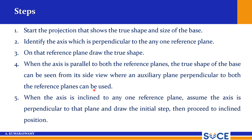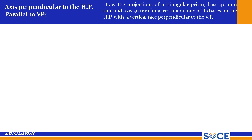When the axis is inclined to any one of the reference planes, this is the special case we will see in the next session. But to start even these kinds of problems, we initially need to assume the axis is perpendicular to that plane. Suppose the given axis is inclined to HP — then we assume the axis is perpendicular to HP in the first step. In the second step, we tilt it with the given theta angle. So the axis is perpendicular to that plane — draw the initial step, then proceed to the inclined position. That is our second step.